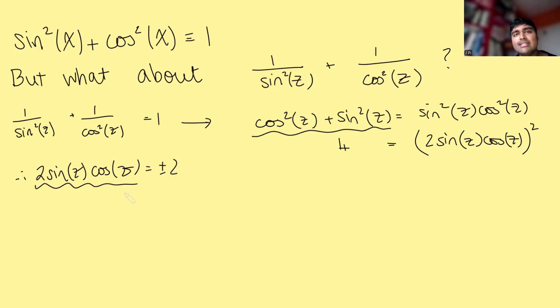What is 2 sine z cos z? We're using our double angle formula. 2 sine z cos z is just sine of 2z. So we have sine of 2z is plus or minus 2. And now normally, if z here was a real number, this would have no solutions. But since z is complex, this actually does have solutions. Let's see why.